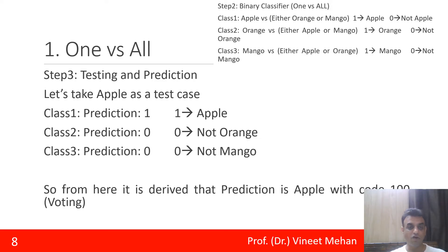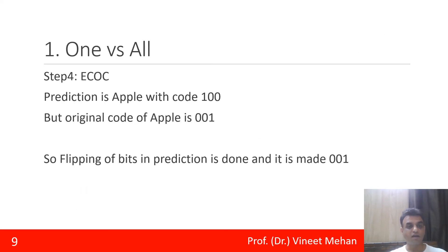So most of the things are depicting it to be apple. So the prediction is apple with a code of 100. But if we carefully observe while error correcting output codes, the prediction is 100, but the original code of apple is 001. We could see it from step number one that apple has a code of 001, but the prediction is having a code of 100. So what is to be done is we need to flip the bits from 100 to 001. So this is how the codes are getting corrected. This was the first technique, one versus all.